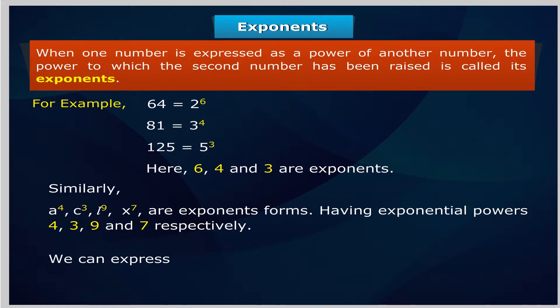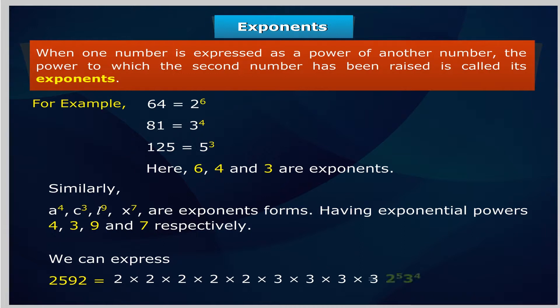We can express 2,592 as 2 multiplied by 2 multiplied by 2 multiplied by 2 multiplied by 2 multiplied by 3 multiplied by 3 multiplied by 3 multiplied by 3, which equals 2 to the power 5 multiplied by 3 to the power 4.